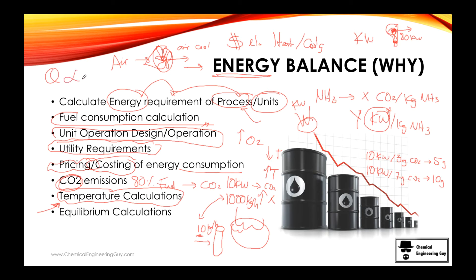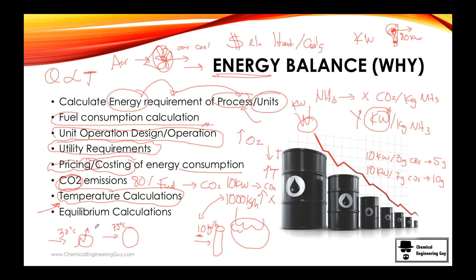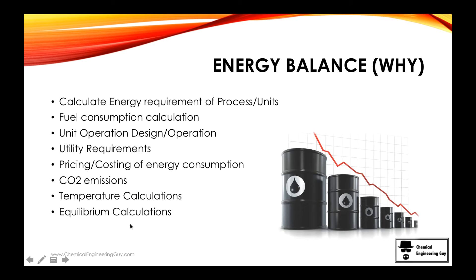Finally, we're very interested in temperature, since heat relates to temperature. If I have a flash separator that needs to operate at 75°C but the feed stream arrives at 30°C, you need to heat it — so how much heat is required to reach that temperature? And beyond that, equilibrium calculations: not only how much heat do we need, but how much separation will we achieve once we reach that temperature?